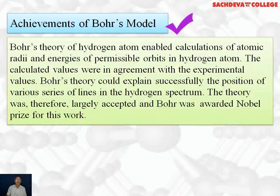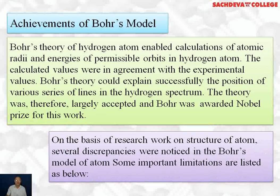Next, we are taking achievements of Bohr model of atom. Bohr theory of hydrogen atom enabled calculation of atomic radii and energies of permissible orbits in hydrogen atom. The calculated values were in agreement with the experimental values. Bohr theory could explain successfully the position of various series of lines in the hydrogen spectrum. The theory was therefore largely accepted and Bohr was awarded a Nobel Prize for this work. On the basis of research work on structure of atom, several discrepancies were noticed in the Bohr model of atom. Some important limitations are listed below.